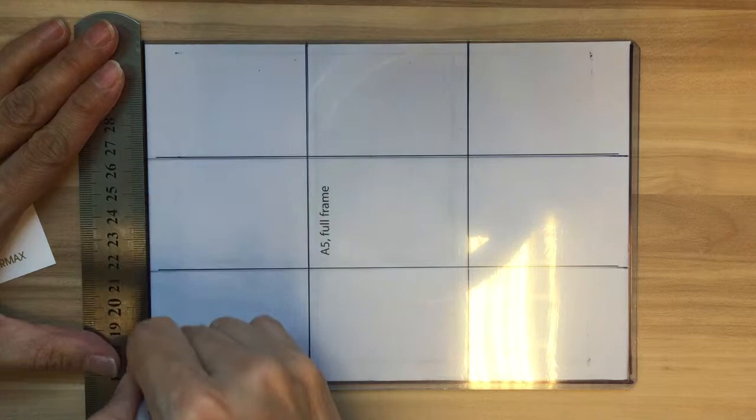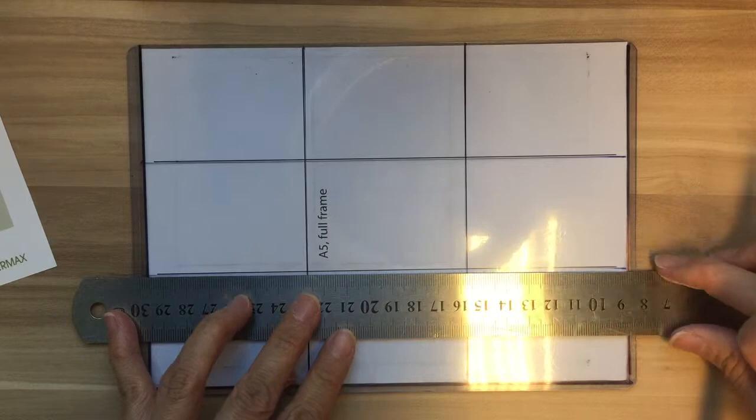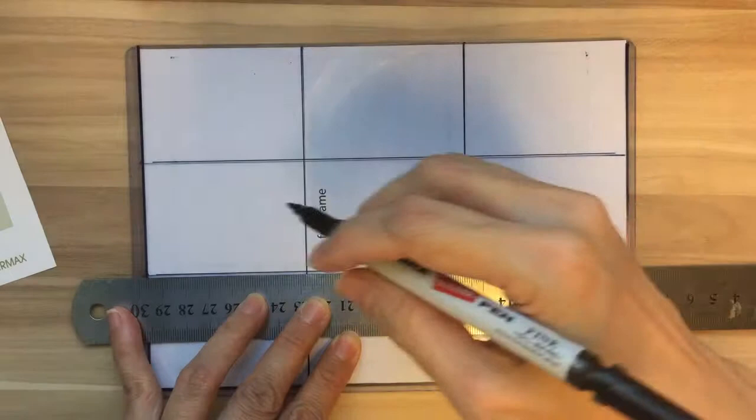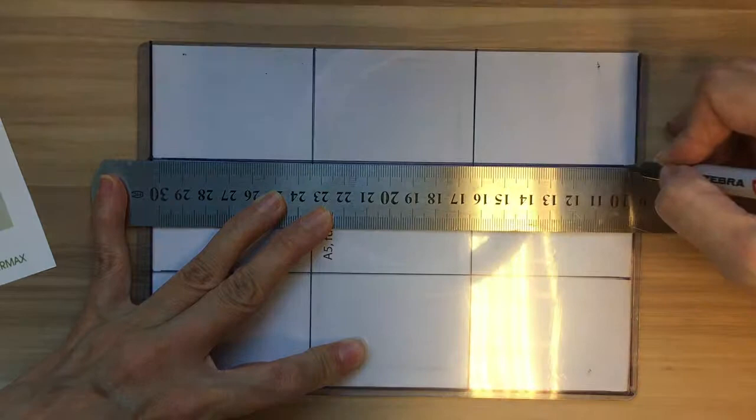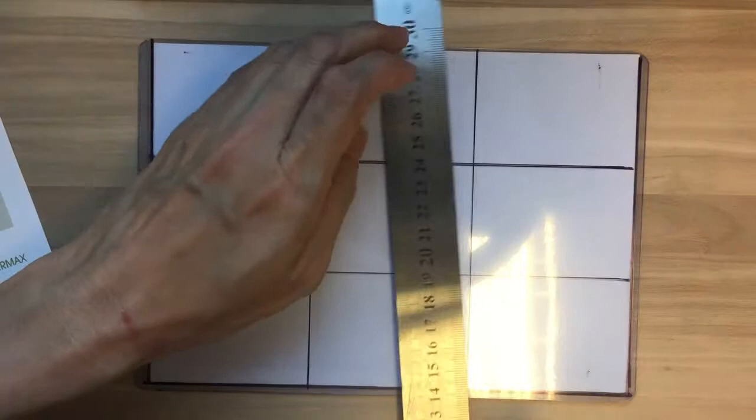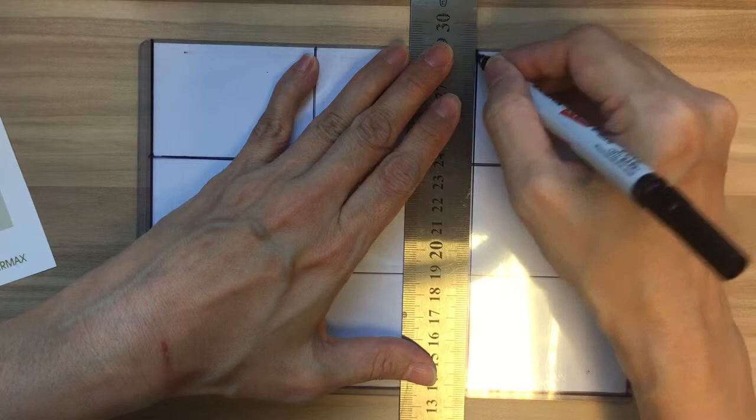Follow the template and draw in the rule of thirds. If you do not have a template, you can just measure the breadth and the length and divide it into equal thirds. That will give you equal dimensions so that when you join the lines, you will get your rule of thirds.